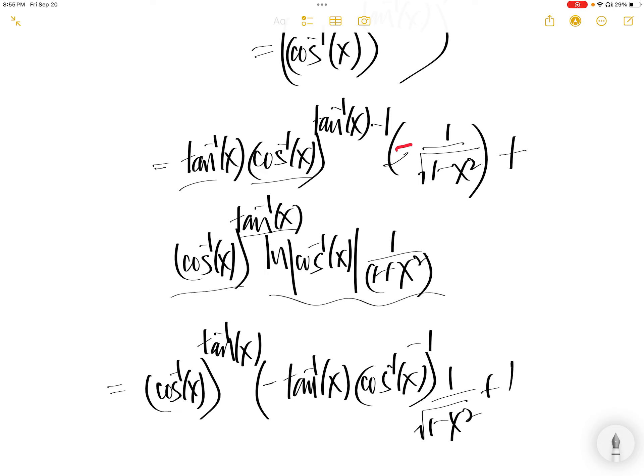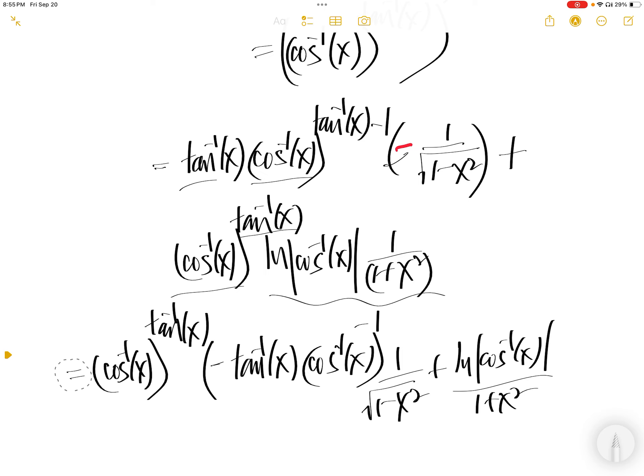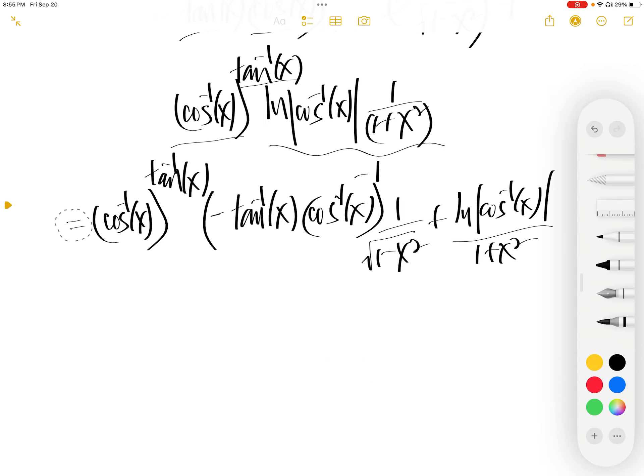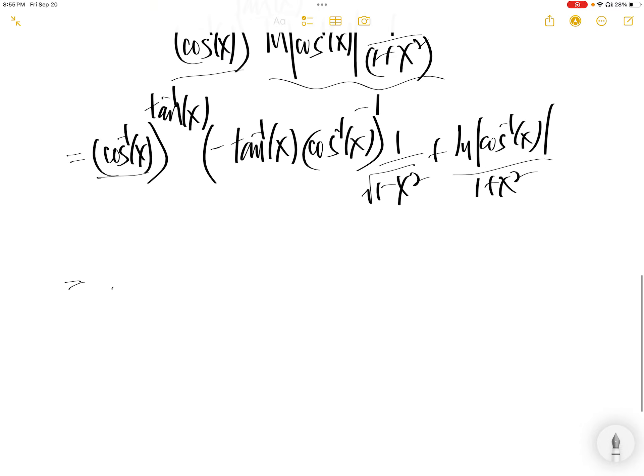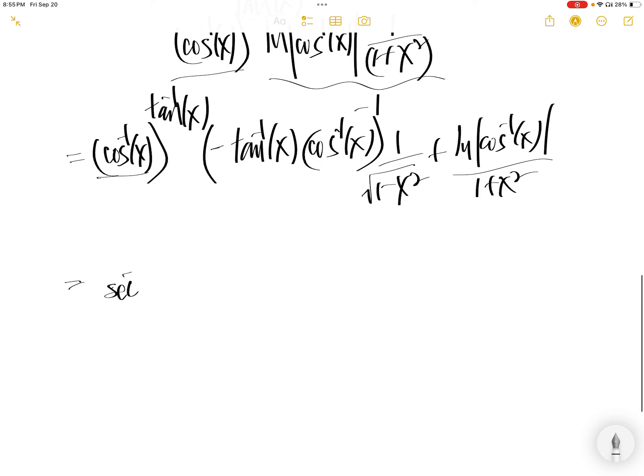You still have to leave it this way, or if you want, change it back to the original form. This is sec, right? Yeah. Arc sec of 1 over x to the power of arc cos of 1 over x, and then you can do this.